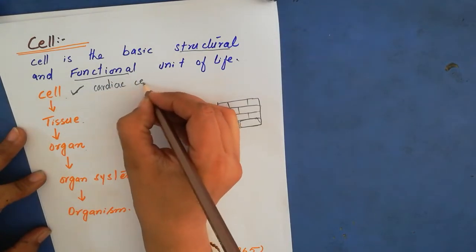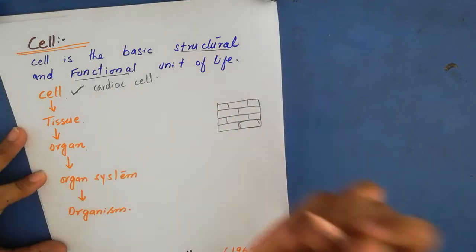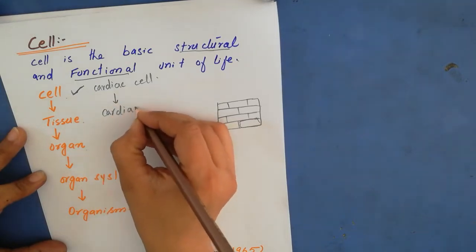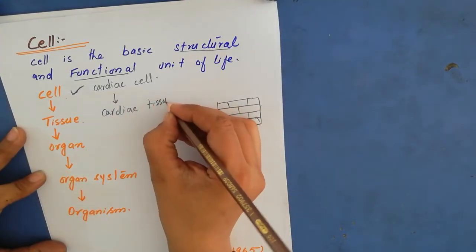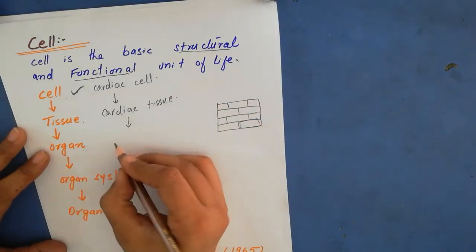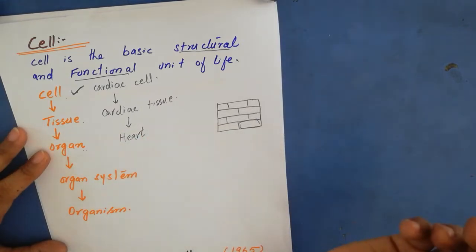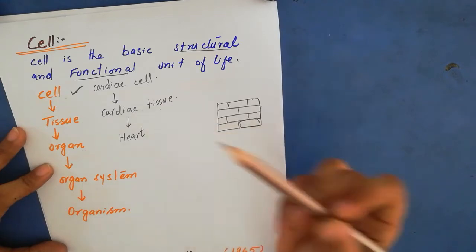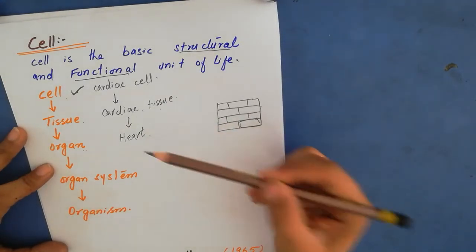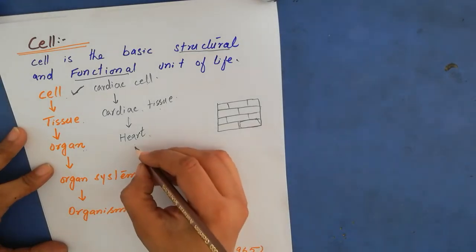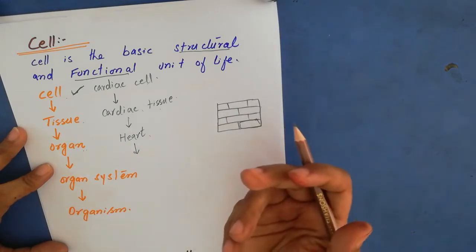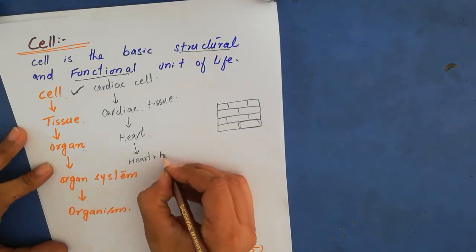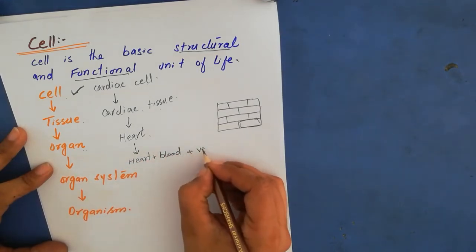Let's take the example of cardiac cells — cells of our heart. Cardiac cells combine together to make cardiac tissue, the tissue of our heart. Different tissues make an organ which is called the heart. The heart is the most important organ of our body. Now, the heart alone can't do everything — it has to work with different veins and arteries.